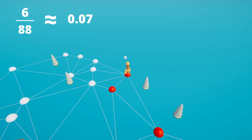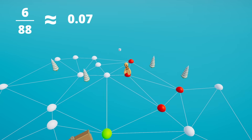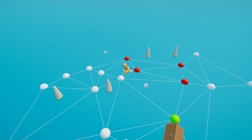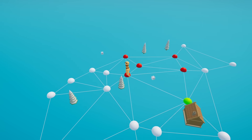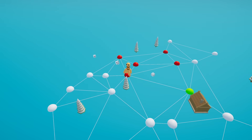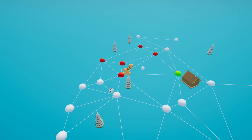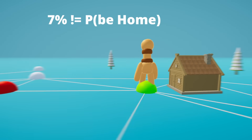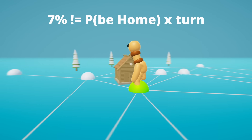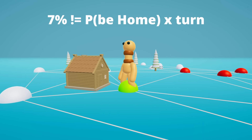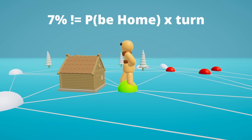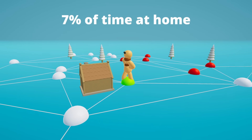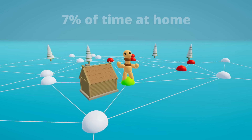Since this fraction is finite for any finite connected graph, the pawn still returns home with probability 1. And it's important to clarify: this is not the probability of landing at home on each turn, but rather the percentage of time the pawn will spend at home given enough time.